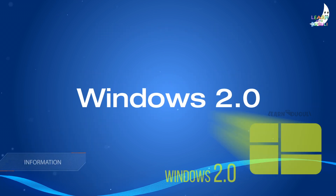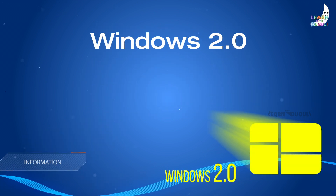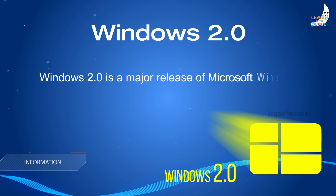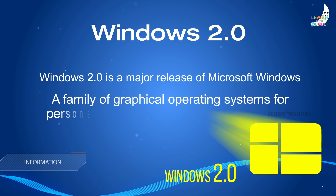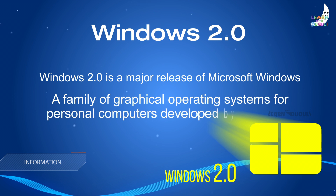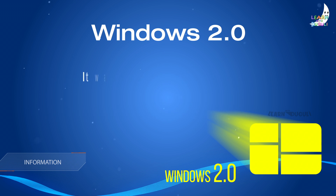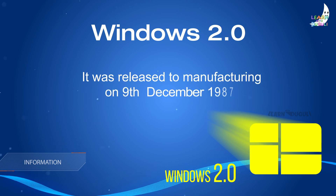Windows 2.0 is a major release of Microsoft Windows, a family of graphical operating systems for personal computers developed by Microsoft. It was released to manufacturing on 9th December 1987.